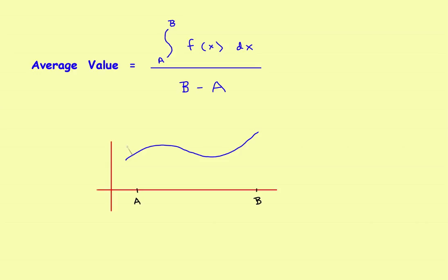Average value problems are actually pretty easy. The definition goes like this: you want to find the average value of a function on a closed interval from a to b. The definition will end up being this. You've got a function f of x, which is right here.